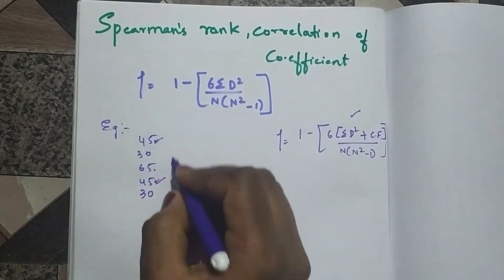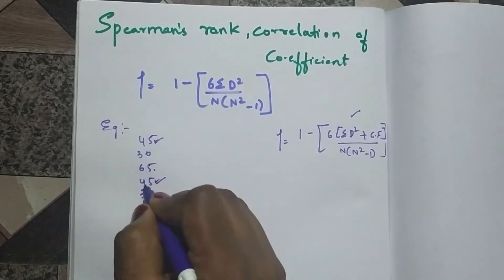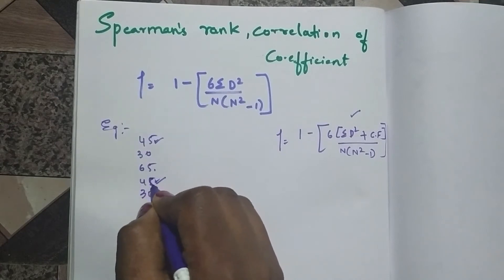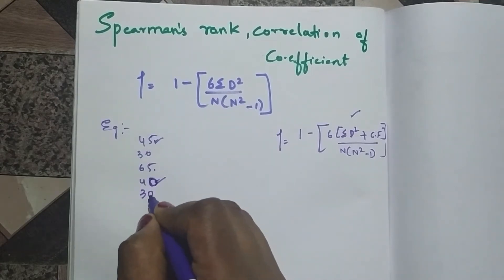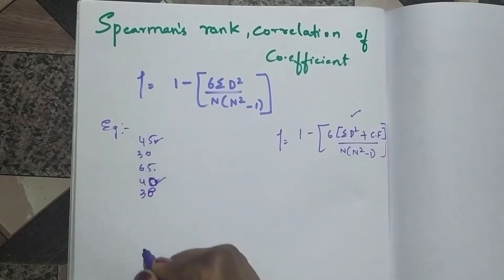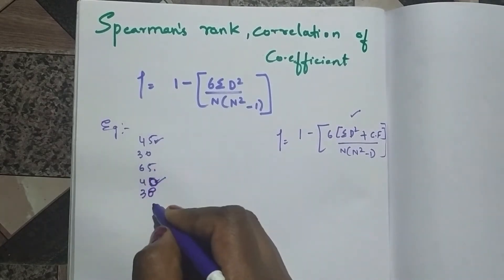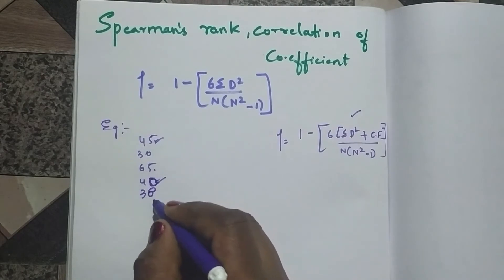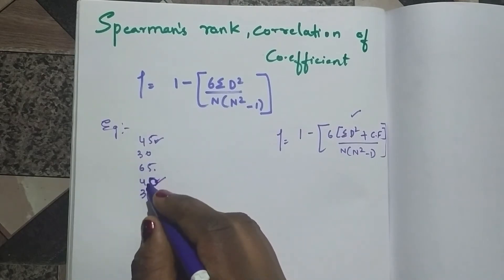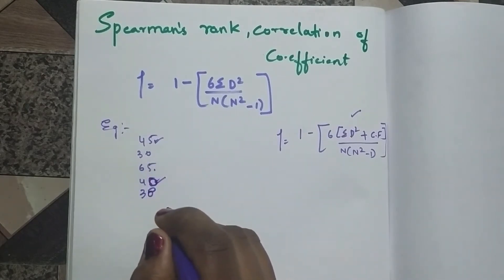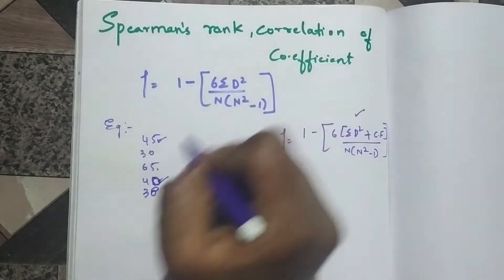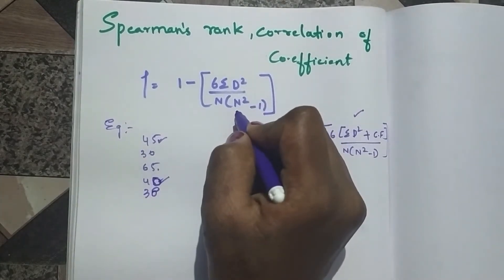For example, if this value becomes 40 and this value becomes 38, then in this example there is no number which is getting repeated twice. This means there is no rank which is getting tied up. So in this case you have to use the basic formula.